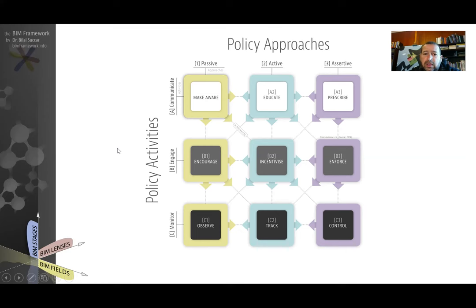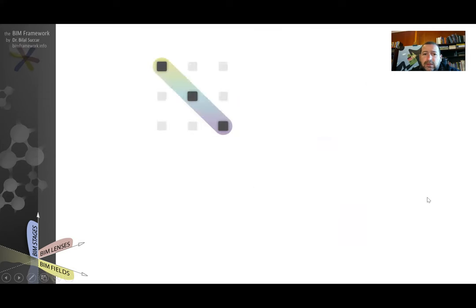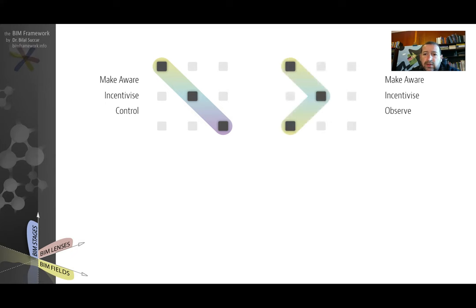It's important to clarify that the same policy maker could start with make aware and over time become educating — but at any given snapshot, it is either make aware, educating, or prescribing. For example, a sample market might show the policy maker making aware, incentivizing, and controlling — a mixture of passive, active, and assertive. Another example would be make aware, incentivize, and observe — starting with passive communication, moving to active engagement, and back to passive tracking.